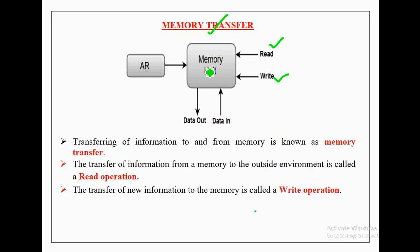To perform memory transfer operations, the corresponding read/write signal must be active. To transfer data from memory unit to outside environment — that is, to perform a read operation — the read signal must be active. And to transfer data from outside environment into the memory unit — that is, to perform a write operation — the write signal must be active. Here, these lines indicate the read and write signals.